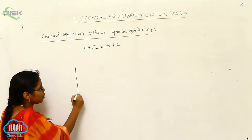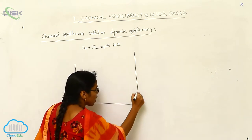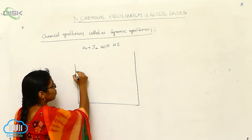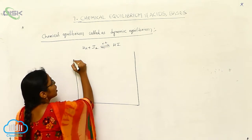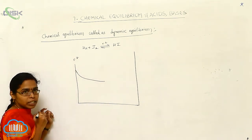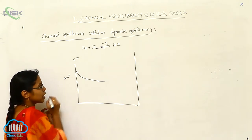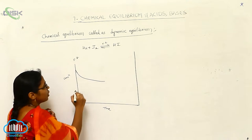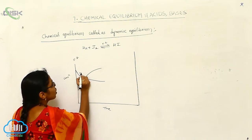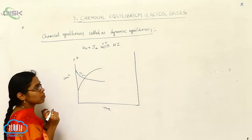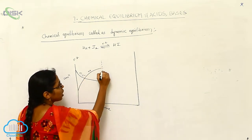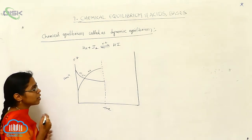I am taking the same graph in both manners — for the forward reaction and for the backward reaction. For the forward reaction, the concentration of H₂ and I₂ decreases over time, while the concentration of HI increases. This represents one kind of equilibrium for the forward reaction.